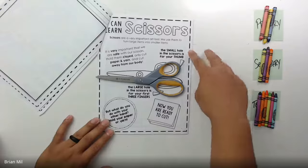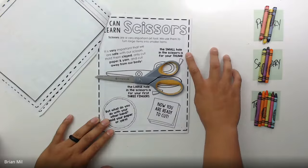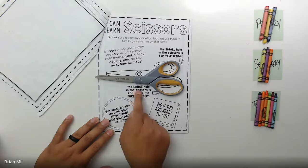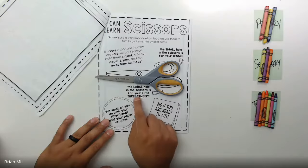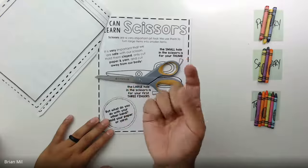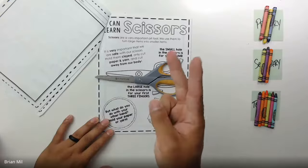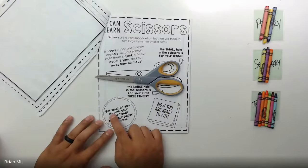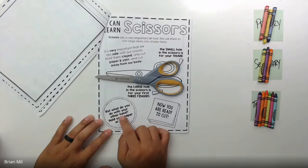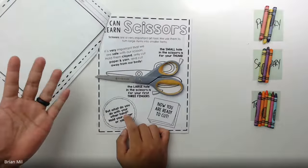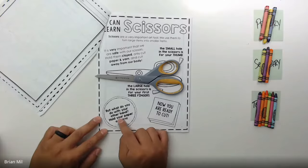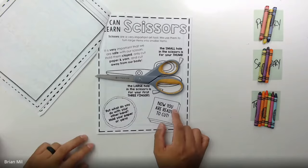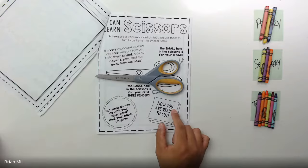Let's talk about what these holes are. The small hole in the scissors is for your thumb. The large hole in the scissors is for your first three fingers: my first finger, middle finger, and ring finger. But what do you do with your other hand? You're going to hold your paper or yarn. Now we're ready to cut. Let's practice this.